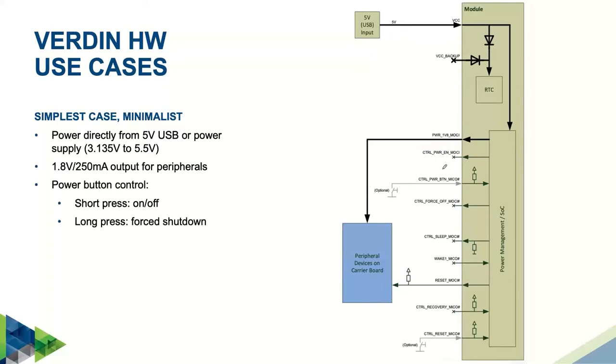Optionally, you can add here the control power button MICO hash. This simple push button will short the signal to ground. This signal offers two behaviors. A short press turns the module on if it's off or sends a shutdown command to your operating system if it's already on. That's similar to the power button behavior we're used to from PCs.